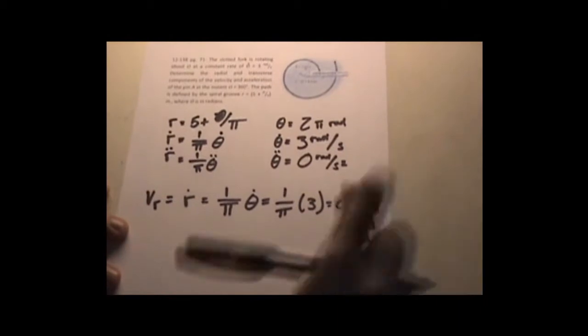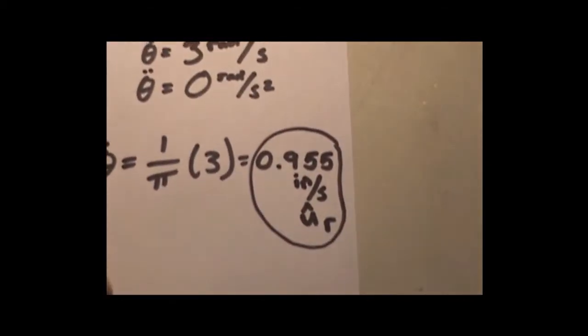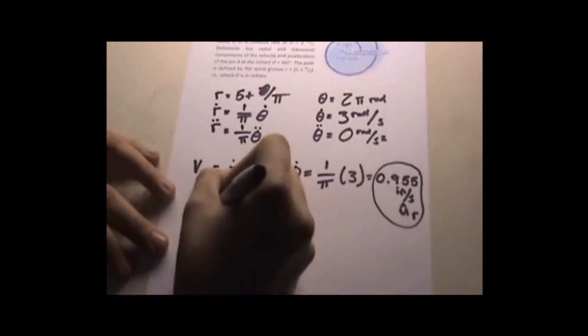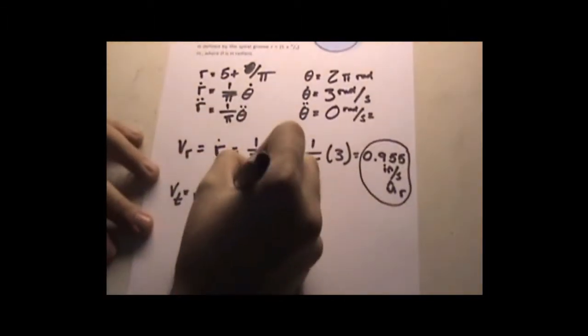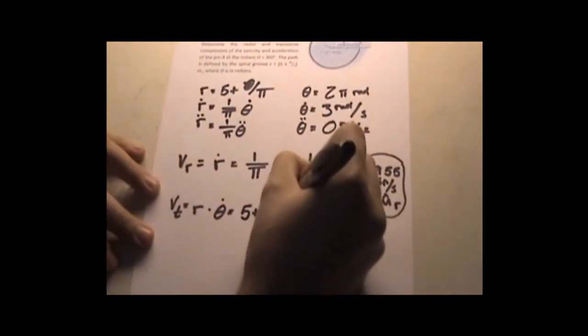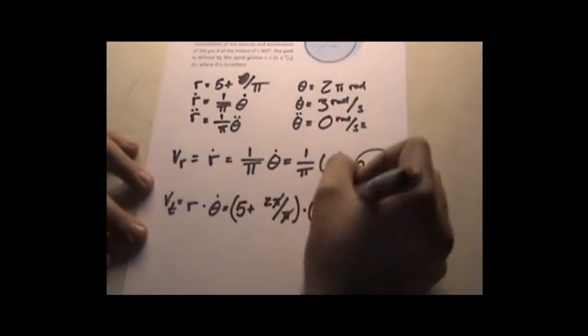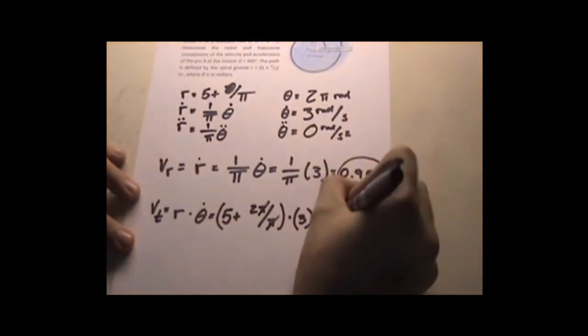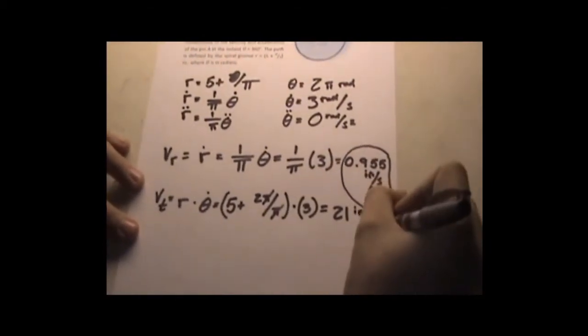0.955 and that is in, because of this little inch here, inches per second. You got to put the little radial unit vector in here too. That's the radial for velocity. Transverse or tangential, tangential rθ̇ equals vₜ. Substitute that in. You get 5 plus, substituting the θ, which is 2π up here, over π times θ̇, which is 3. Pies go away. 5 plus 2 is 7 times 3 is 21 inches per second. Don't forget to put the unit vector for the tangential.